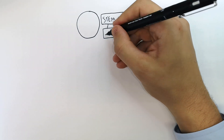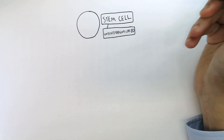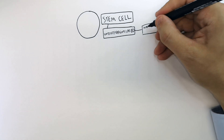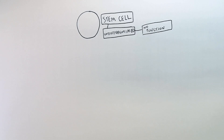Stem cells are what we call undifferentiated cells. They're undifferentiated — they have no function. These stem cells differentiate into specialized cells.